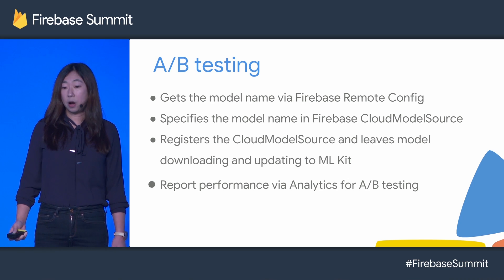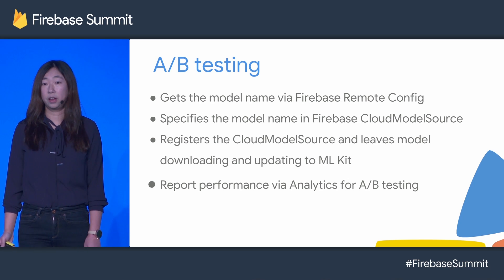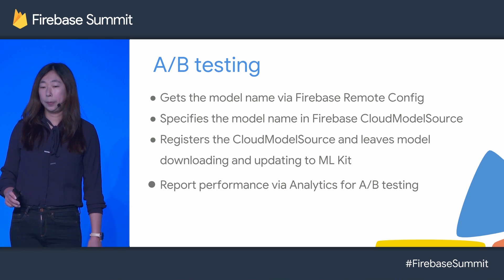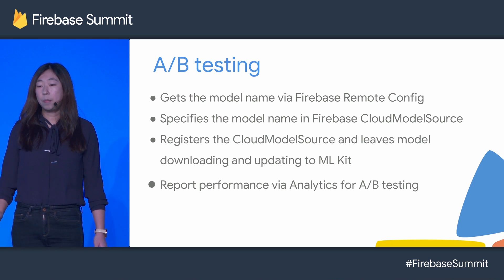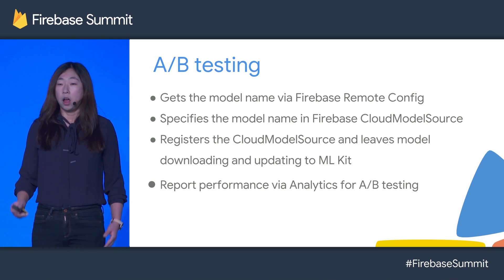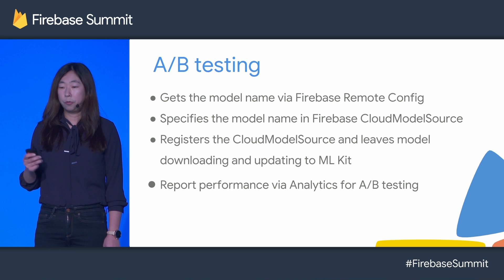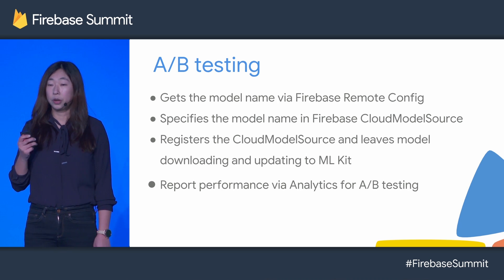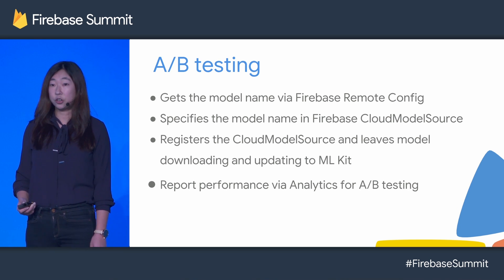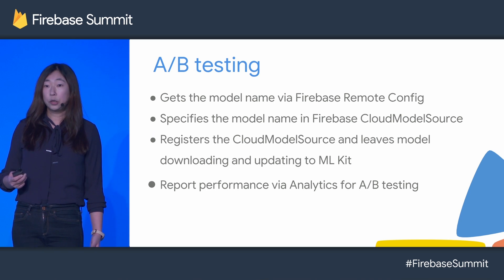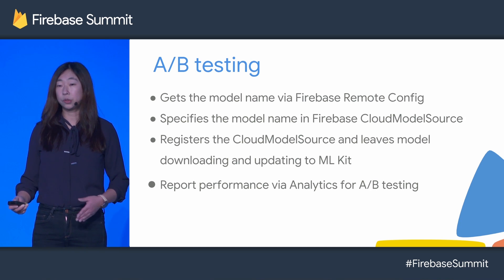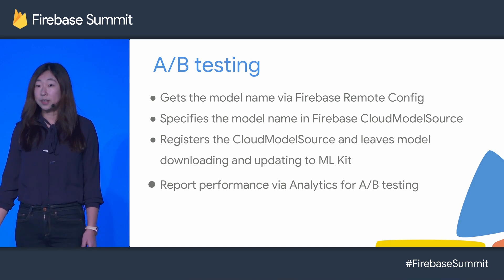With ML Kit's cloud model serving feature, together with all the toolings offered by Firebase, doing A/B testing is really simple if you have multiple versions of your model. First, you need to create an experiment for your model name via Firebase Remote Config. Then in the Remote Config SDK on both Android and iOS, you can easily get the model name. You specify the model name with Firebase Cloud Model Source and register your cloud model source with Model Manager. From there, you can leave everything to ML Kit, which fully takes care of downloading and updating the model for you. You can also report performance on your user's actions via Firebase Analytics, and then go to the Firebase console to compare the metrics of your different model versions side by side. A/B testing is just that simple.